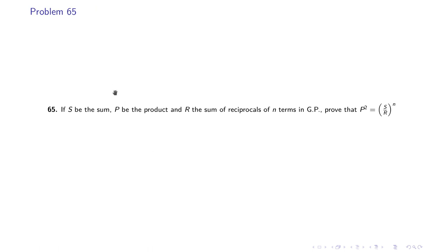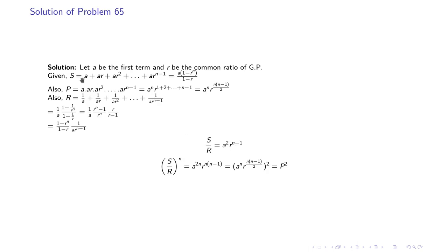Problem 65: If S is the sum, P is the product, and R is the sum of reciprocals of n terms in a GP, prove that P² = (S/R)ⁿ. We assume a to be the first term and r as the common ratio. The sum S = a(1 − rⁿ)/(1 − r), the product P = aⁿ · r^(n(n−1)/2), since the powers of r form an AP summing to n(n−1)/2.